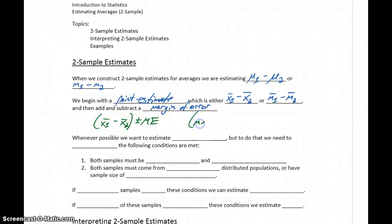Or we're taking m1 bar minus m2 bar, adding and subtracting that margin of error. So again, the center of our interval will be the difference of those sample medians.